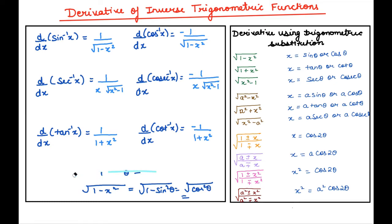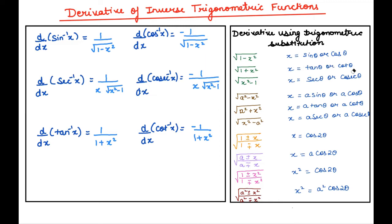Similarly, if you have √(1+x²), substitute x = tan θ or x = cot θ, using the identity 1 + tan²θ = sec²θ and 1 + cot²θ = cosec²θ. If you see √(x²−1), substitute x = sec θ or x = cosec θ. As a memory aid: √(1−x²) pairs with sin⁻¹ and cos⁻¹; (1+x²) pairs with tan⁻¹ and cot⁻¹; (x²−1) pairs with sec⁻¹.